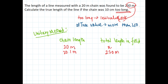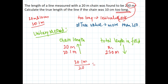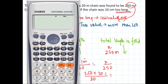Since the chain length is more, the measured value will be less — so the relation is inverse. Setting up the inverse proportion: if the actual chain length is 20.1 m and the nominal length is 20 m, the true length x equals 250 multiplied by 20.1 divided by 20.